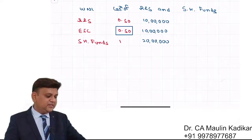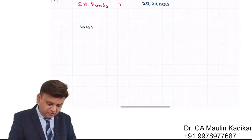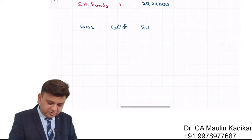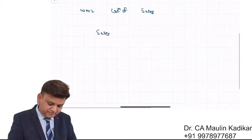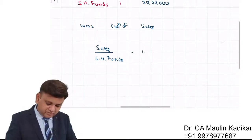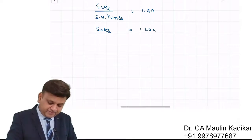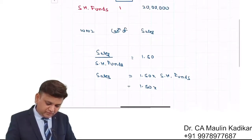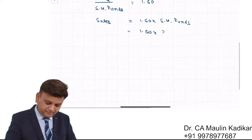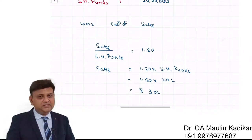The second piece of information is sales to shareholders funds = 1.5. Once we have shareholders funds, Working Note 2 calculates sales. Sales upon shareholders funds = 1.50, so sales = 1.5 × shareholders funds of 20 lakhs, which comes to Rs. 30 lakhs.